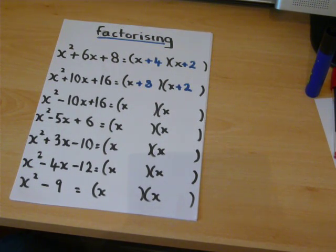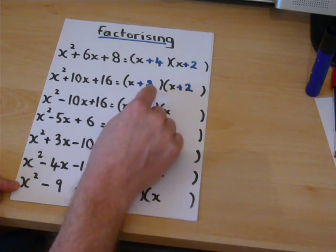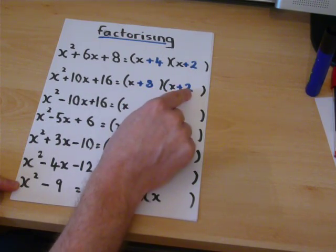So, in the second example, eight times two is sixteen, and eight plus two is ten.